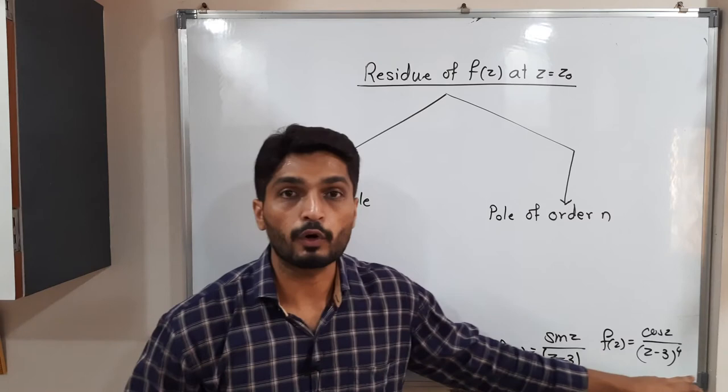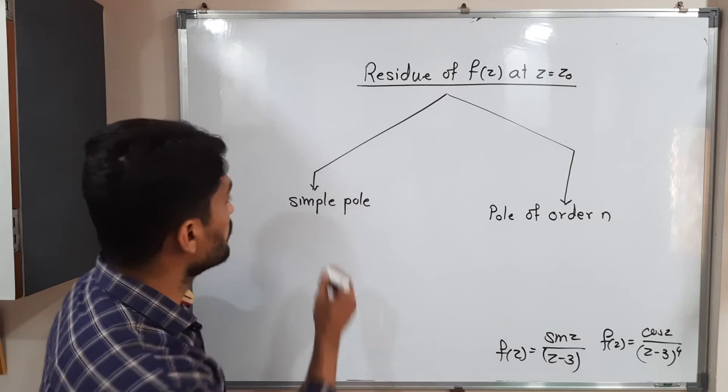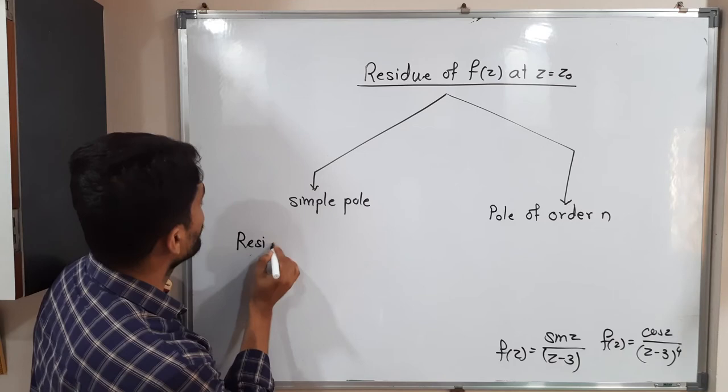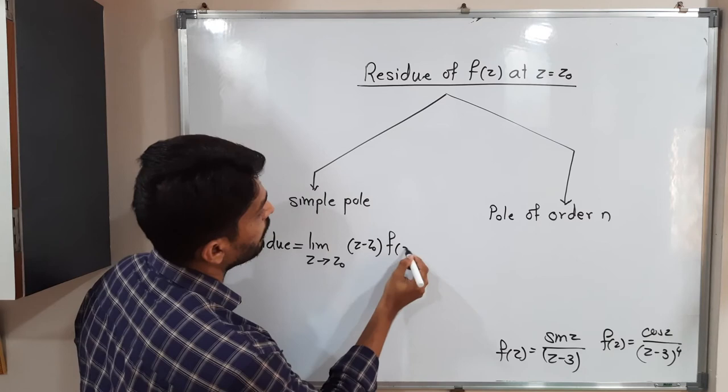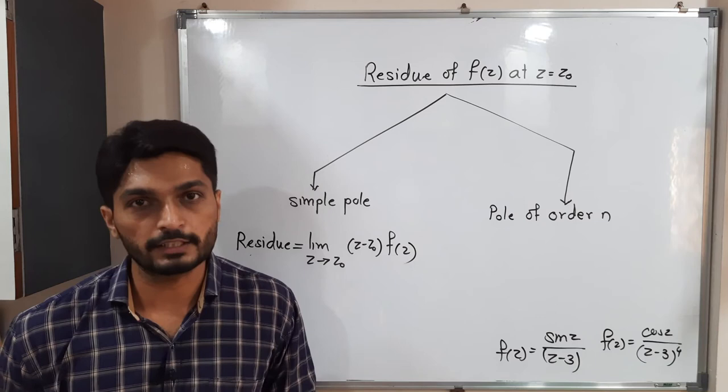When you have a simple pole, the formula is also simple. What is it? Residue equals limit as z tends to z₀ of (z - z₀) f(z). By solving this limit, whatever value you get will be the residue of f(z) at z = z₀.